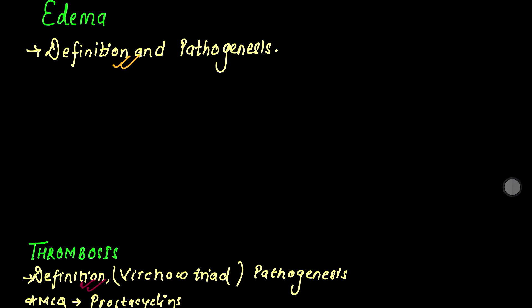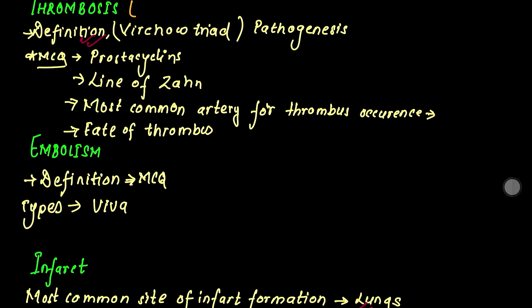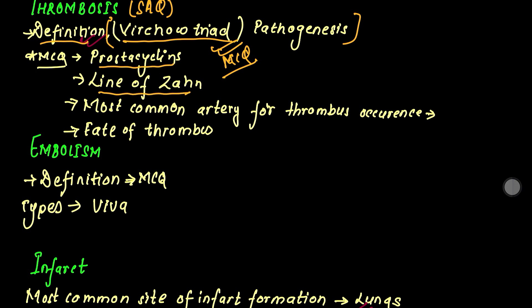We have references to the definition and pathogenesis. The next topic includes the concept of thrombosis. We need to think about prostacyclins and how we understand the line-of-life. We also need to think about the most common activity related to thrombus formation.